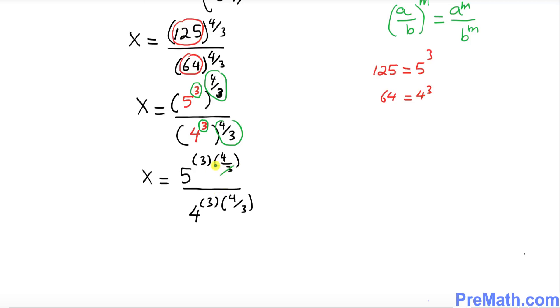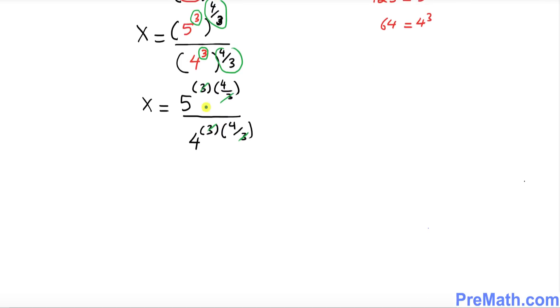Now you can see this 3 and 3 is gone. This 3 reduces with this 3. So pretty much we ended up with x equal to 5 power 4 divided by 4 power 4. So that means 5 power 4 is 625 because we multiply 5 four times, and 4 power 4 is 256, and that is our solution.